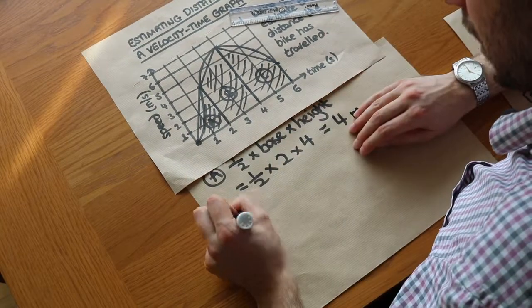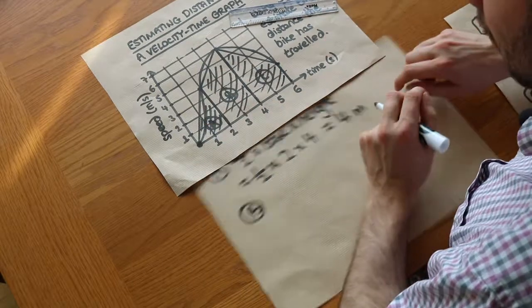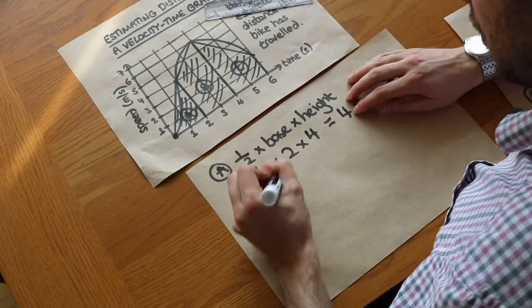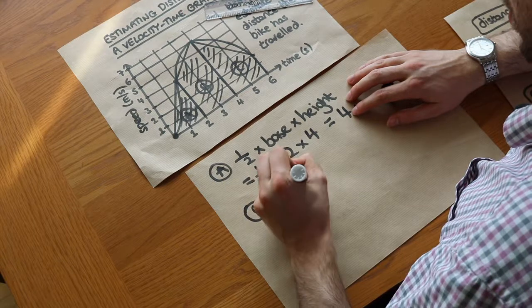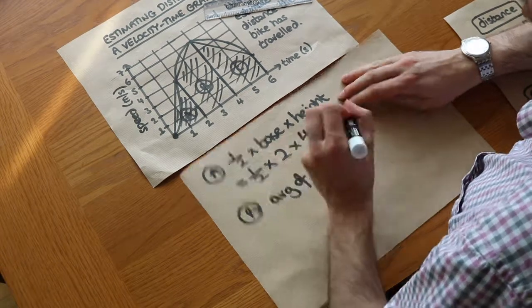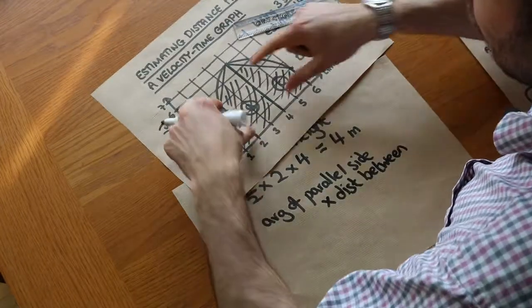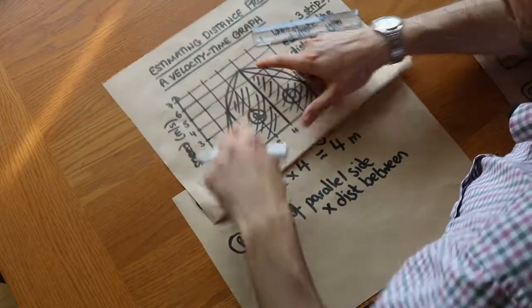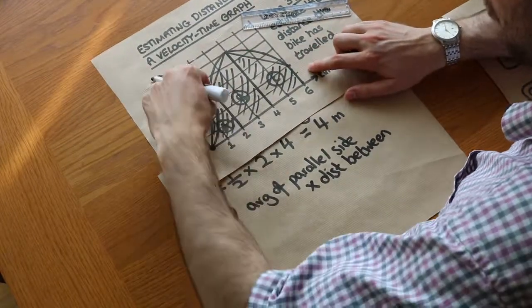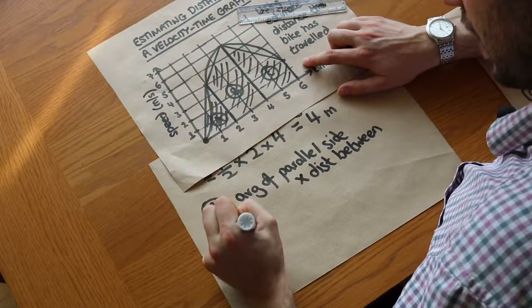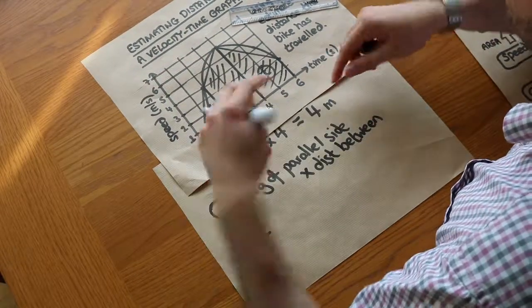What about b? This is a trapezium. Now the area of a trapezium is the average of the parallel sides times by the distance between them. So can we see that these are the two parallel lines on this trapezium? So we want to find the average of those two parallel sides. And to find the average of two numbers, we just add them and divide by two.